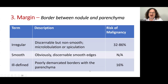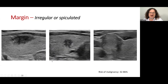The third descriptor is the margin — the border between the nodule and the parenchyma. It may be irregular, with microlobulation or spiculation; discernible but not smooth; smooth; or poorly demarcated, which is called ill-defined. These are three examples of malignant nodules showing microlobulations, irregular borders, spiculations, and irregular speculated margins.